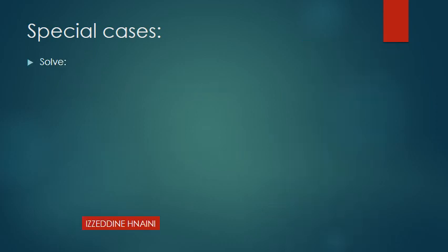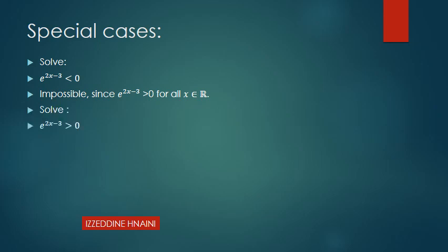Solve e^(x-3) < 0. This is always impossible because the exponential is always positive and cannot be less than 0. However, e^(x-3) > 0 is always true, so the solution is all of ℝ.